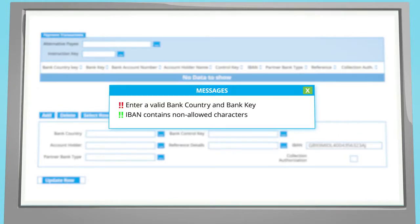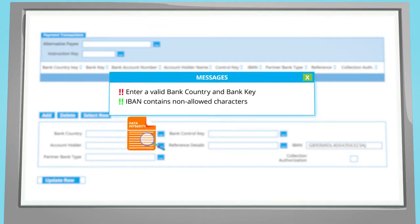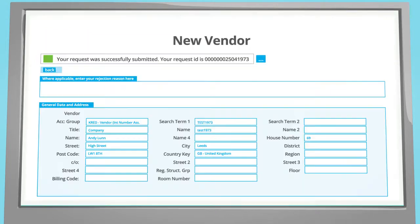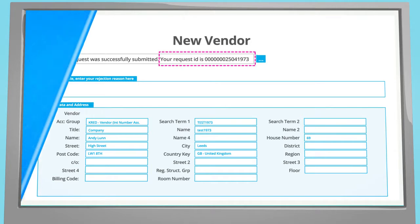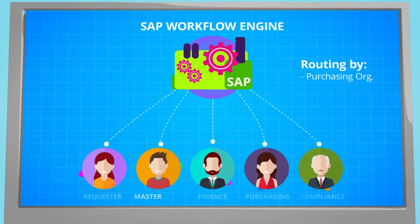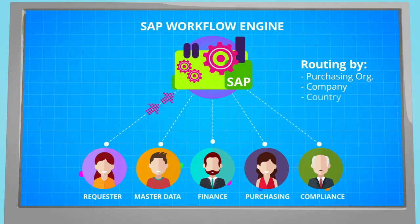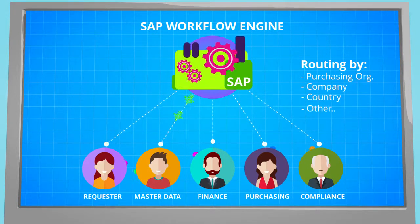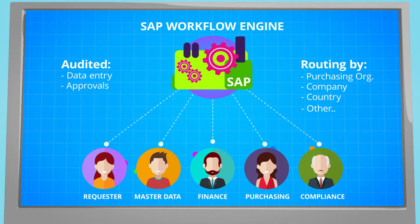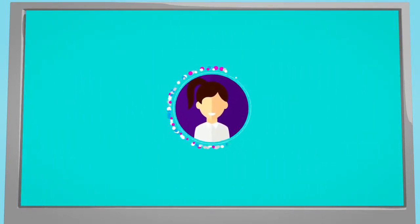All data entry is fully validated against your existing SAP configuration and vendor transaction inside SAP, delivering high data accuracy and integrity. When data entry is complete, the request is submitted for approval using purchasing organization, company code, country, and any other fields you choose. This ensures that the right audited approvals are in place before the vendor data is updated in the SAP database.